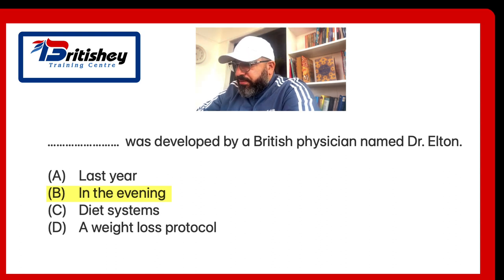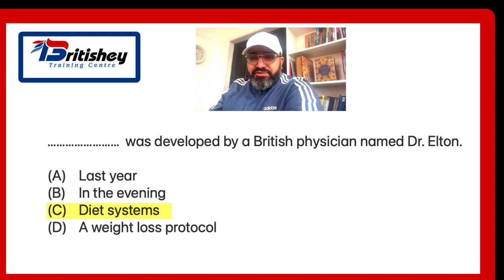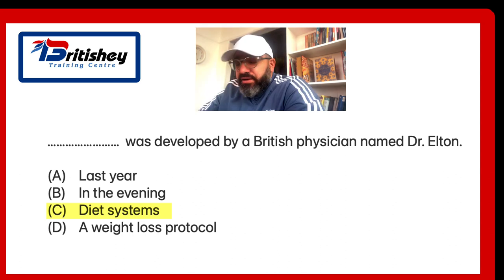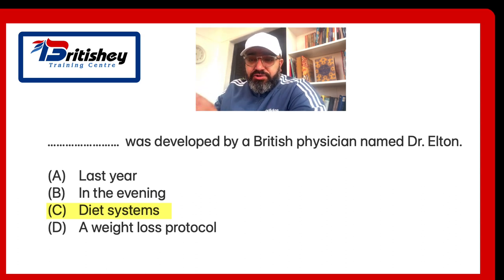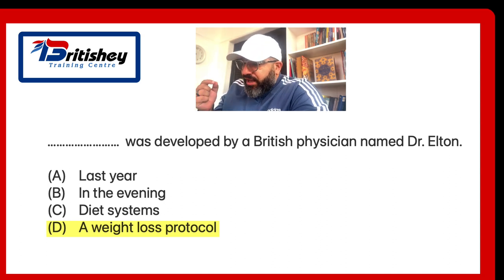Option C: 'diet systems' — this could be a subject, however 'diet systems' is plural and you cannot use a plural subject with 'was' — you would need 'were.' So that's not a good option either. That leaves us with option D: 'a weight loss protocol.' 'Protocol' is a singular noun, so it can stand as a subject. The answer is: 'A weight loss protocol was developed by a British physician named Dr. Elton.'